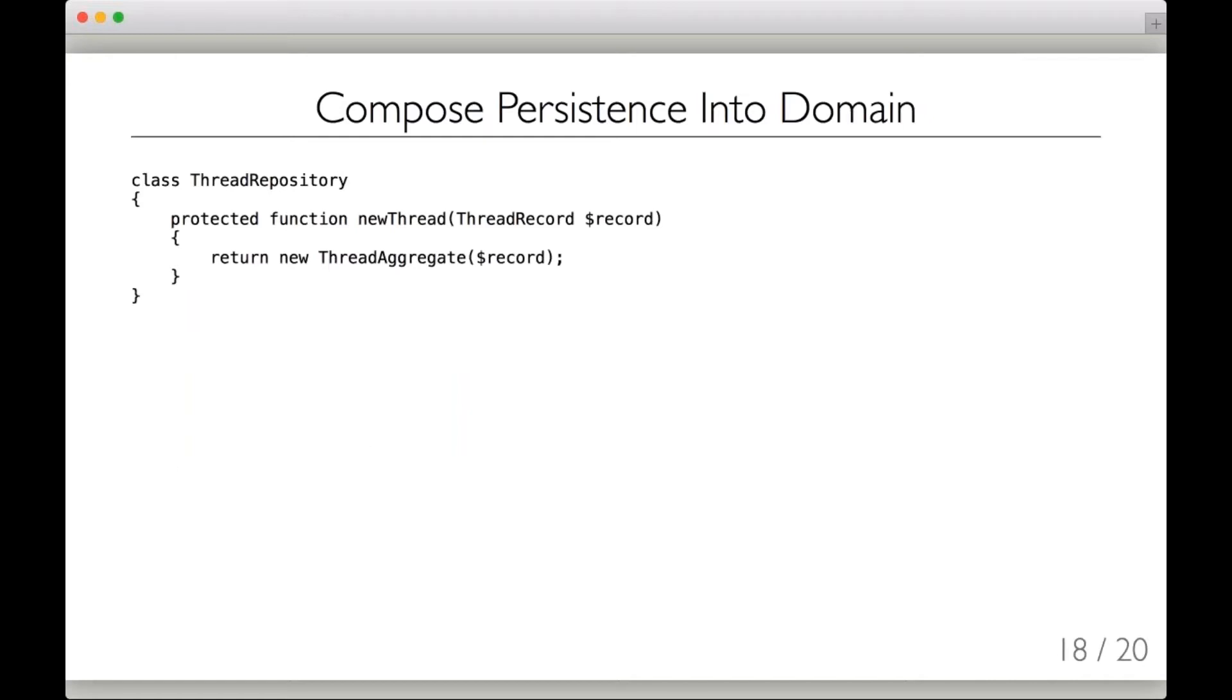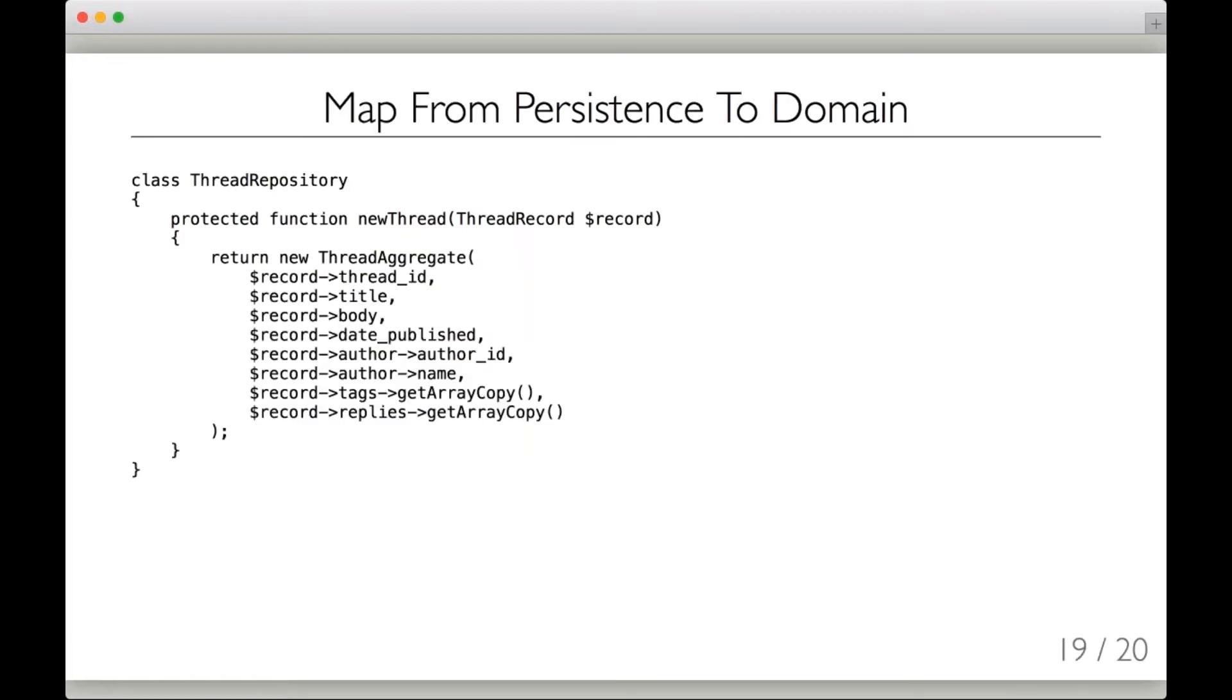We can do this in a couple of different ways. We can compose the persistence record into the domain element so that when we build our thread aggregate, we can build it in such a way that it encapsulates the record and uses the record as a backing store but never exposes the record itself. It only exposes its own interface. Or alternatively, we can do a little extra work and map from the thread record over to the thread aggregate element by element and say we want to pass in the thread ID, the title as individual elements. This is actually the cleanest way of doing it. This is where you see a strong domain mapping out of the persistence and away from persistence entirely instead of being backed by a record object.